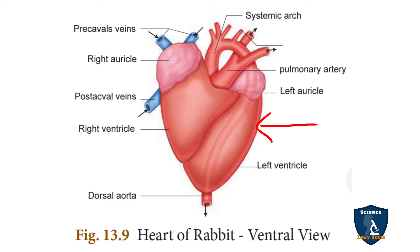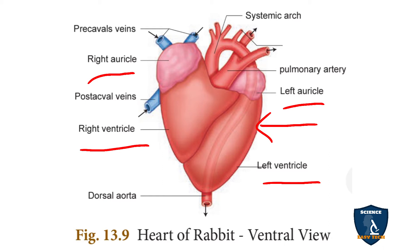The heart has two auricles and two ventricles — left auricle and right auricle, interconnected by the auricular septum. There are two ventricles, left and right ventricle. So the heart of a rabbit is four-chambered, and they are connected by auricular septum and ventricular septum.